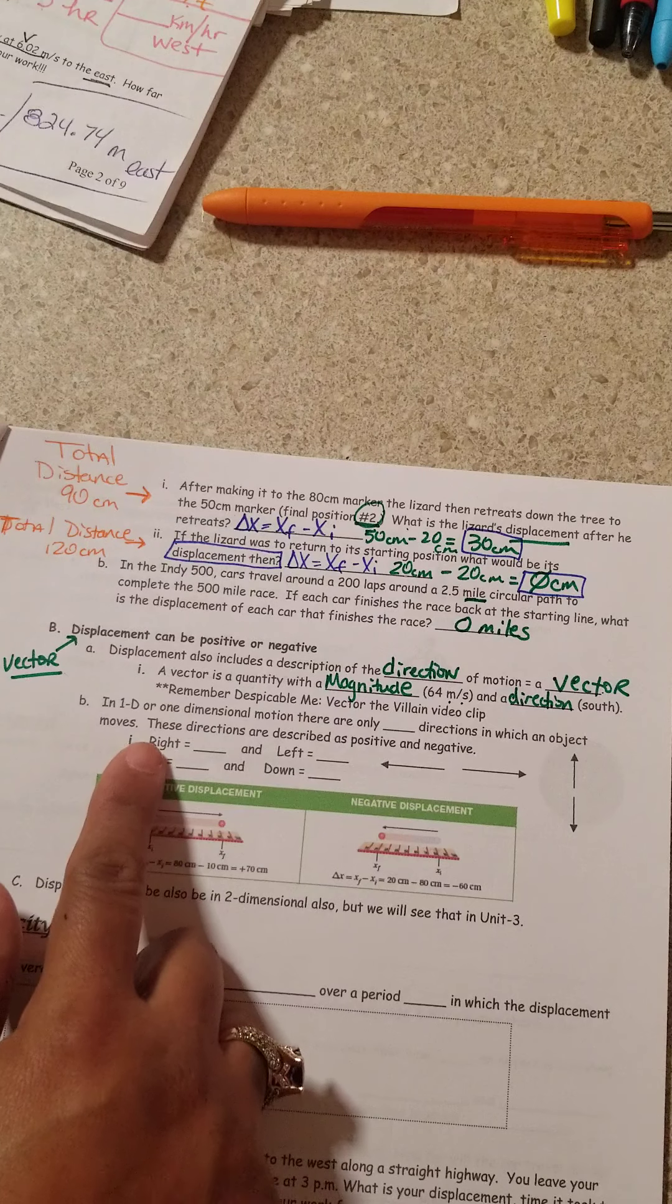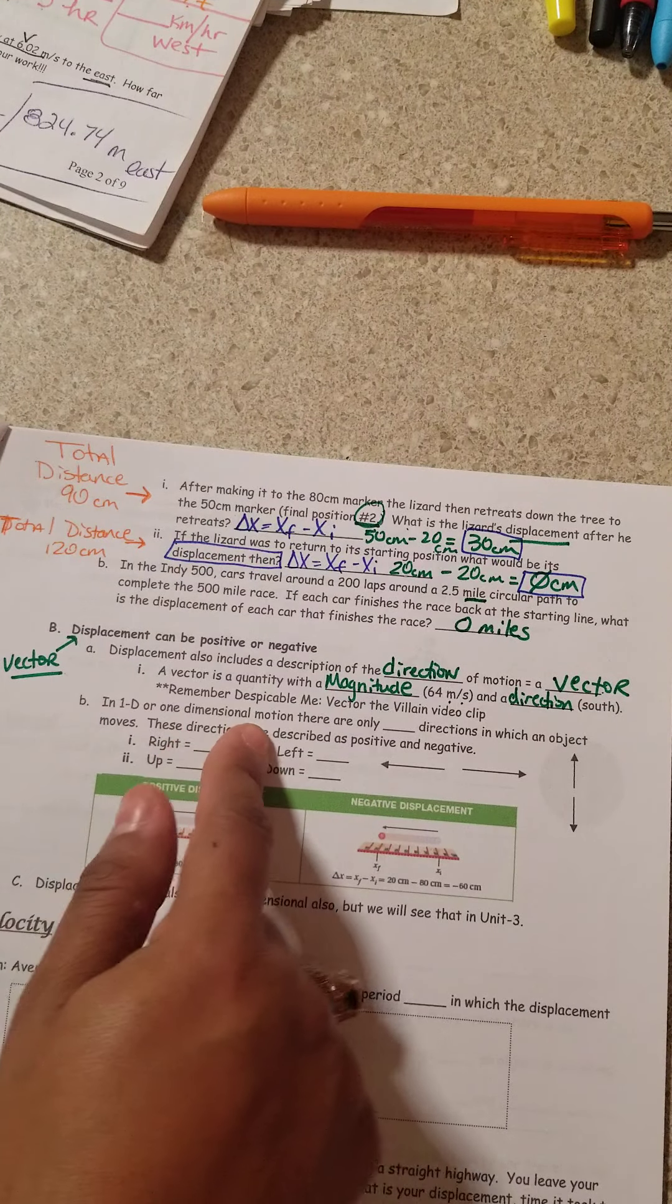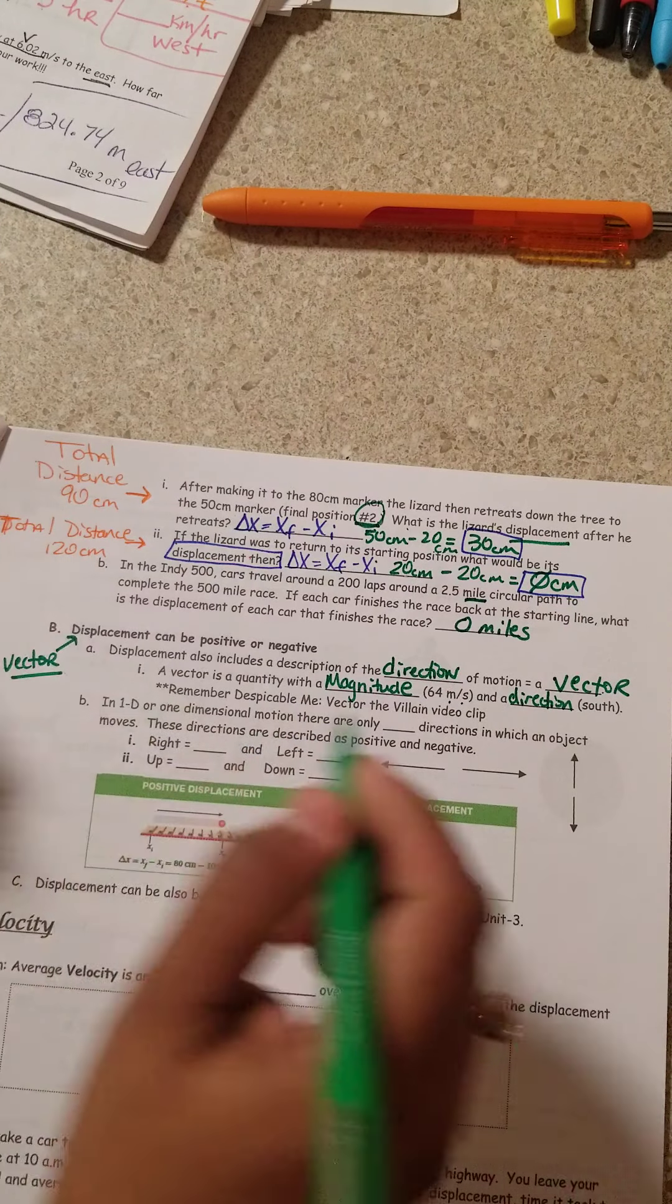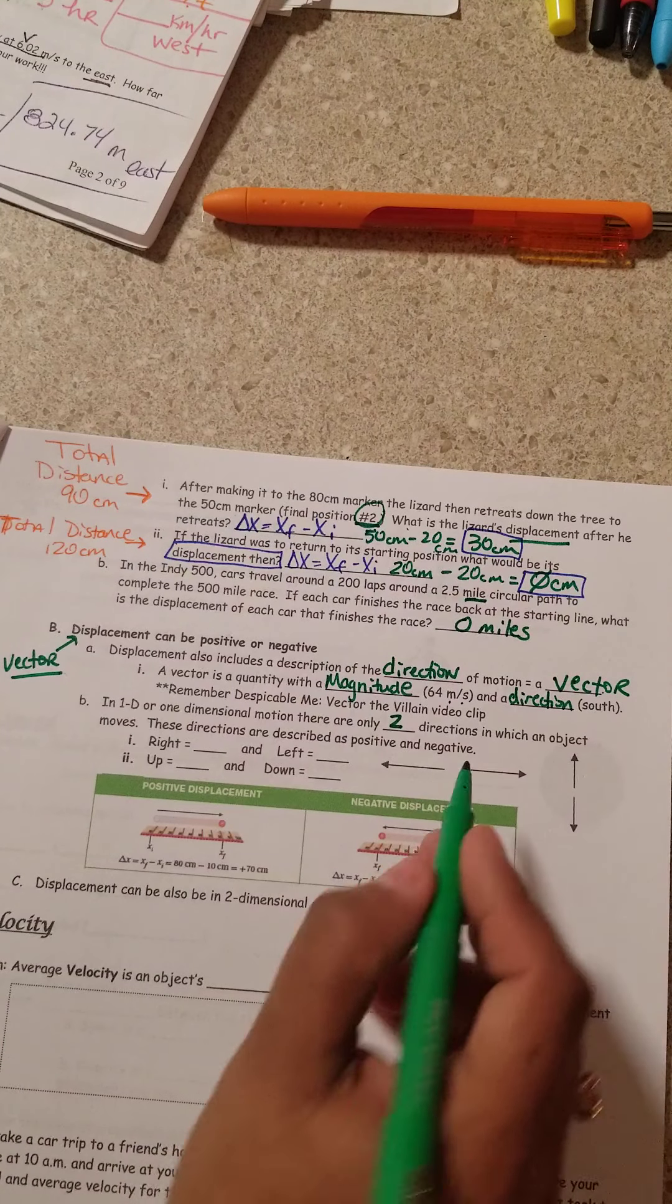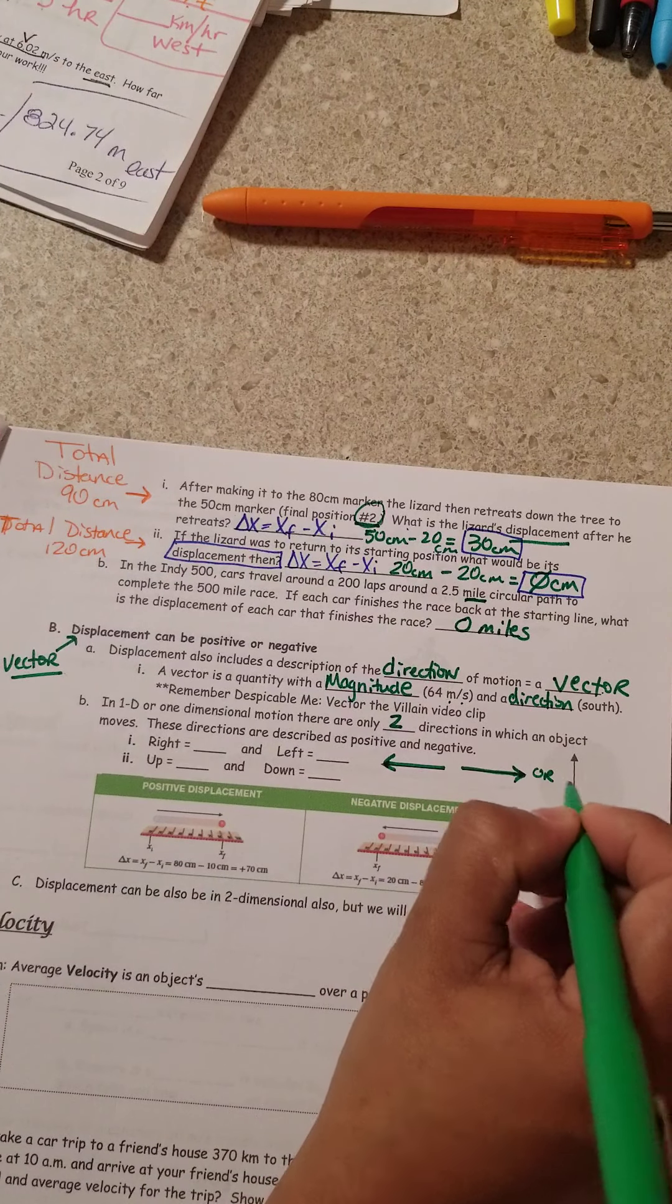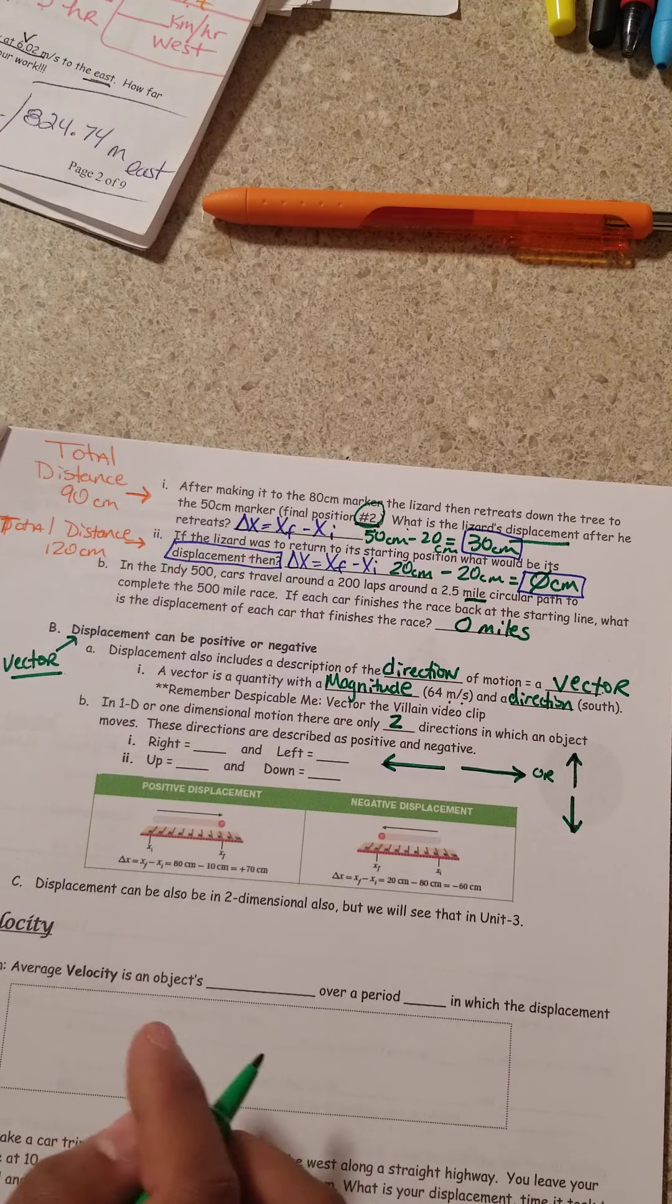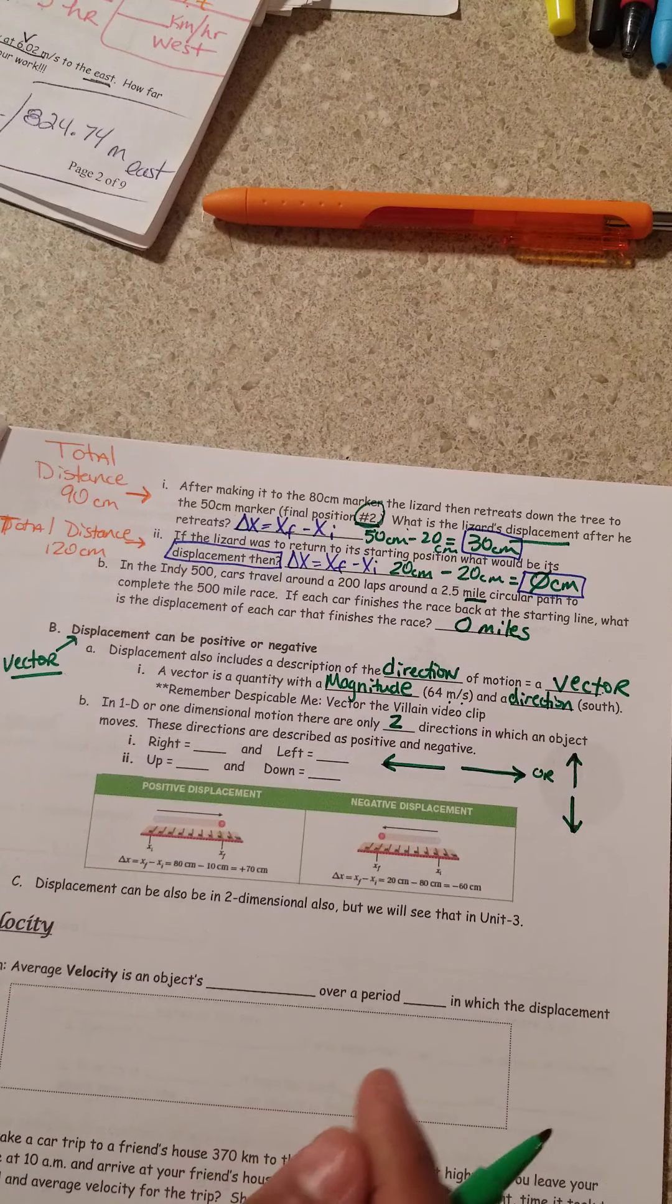The next one here, it says here though, in 1D, or we call it one dimensional motion, there are only two directions in which an object is going to move. Either it's going to move right and left, or it's going to move up and down. We are not going to move right and up yet. We will. We're not going to move left and down yet, but we will.